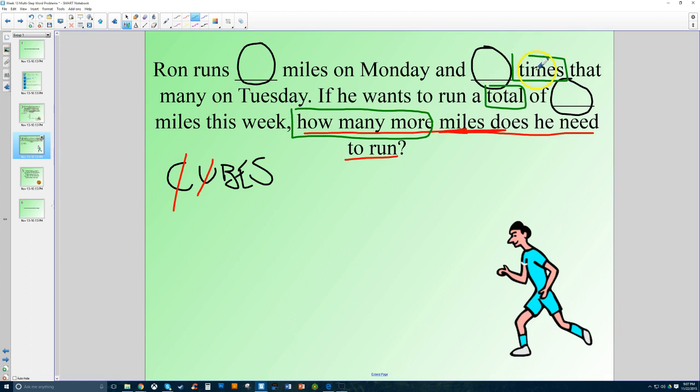Looking back here, remember we talked about how times usually means multiplication. In this case, since it says blank times that many on Tuesday, we know that Tuesday is more than Monday. So this should be a larger number. So I know I have to multiply there. And he wants to run a total of a certain number here. So that means that with a total, that means that there's probably a larger number here. And how many more usually means to subtract.